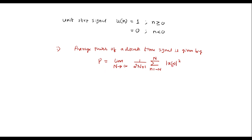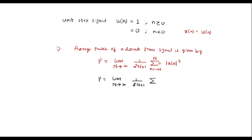Here x of n is the input signal. With respect to this problem, x of n is equal to U of n. Therefore, P is equal to limit n tends to infinity, 1 divided by 2n plus 1, summation. Since the unit step signal exists only for n greater than or equal to 0, its value is 0 for n less than 0. So from minus n to 0 the value is 0, and we start the summation from n equal to 0 to n, where x of n equals 1, that is 1 squared.